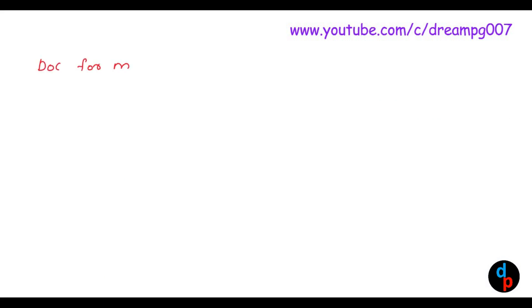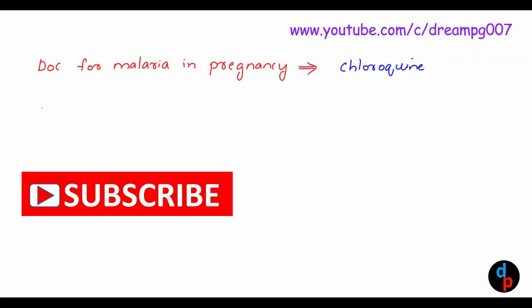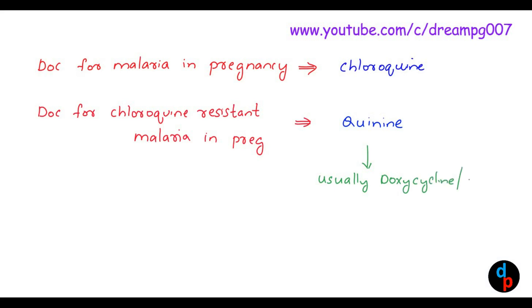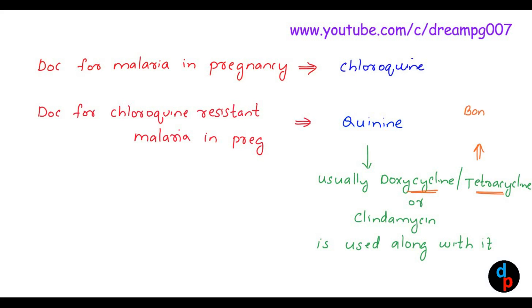The drug of choice for malaria in pregnancy is chloroquine itself. The drug of choice for chloroquine-resistant malaria in pregnancy is quinine. Usually with quinine, we give doxycycline, tetracycline, or clindamycin. But in pregnancy, doxycycline and tetracycline can lead to poor bone and teeth development, so they are avoided. Therefore, the drug combined with quinine in pregnancy is clindamycin.